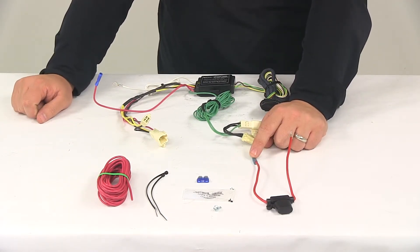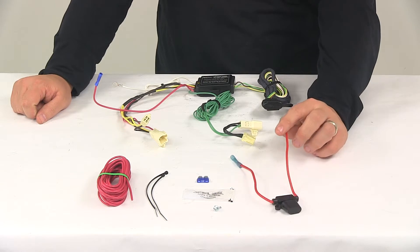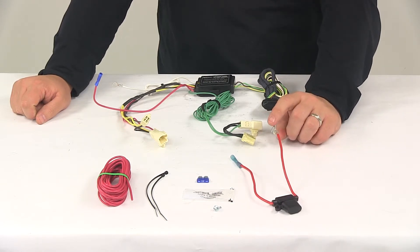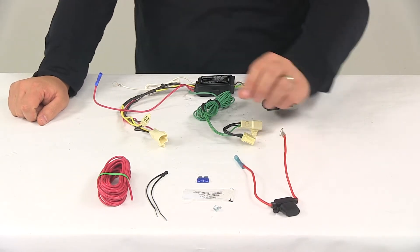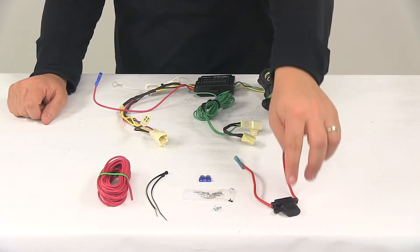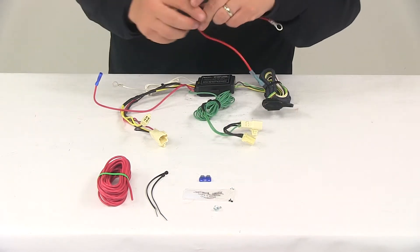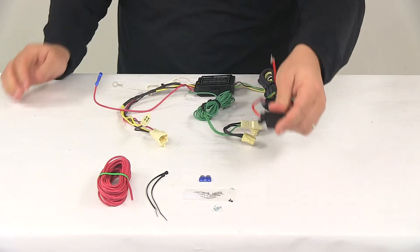Connects to one half of the fuse holder here at the butt connector. The other half of the fuse holder has a ring terminal on there. That gets connected to the positive post of the vehicle battery. It does come with your 15 amp fuse, goes directly in the fuse holder, and it's got the fuse cap that goes over to keep it safe and protected.